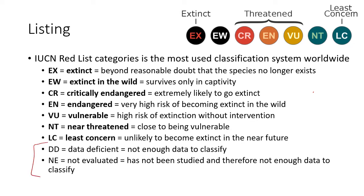There are a couple other categories not shown in the diagram. Data deficient means there's not enough data to classify a species. A lot of species are data deficient because people haven't done the studies or gone into the field. A newly discovered species might be data deficient, or might go straight to endangered because so few individuals exist. Organisms such as bacteria are typically data deficient. Not evaluated means they haven't been studied, so there's no data to classify them.